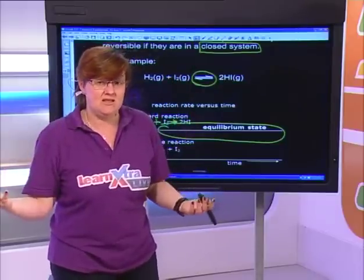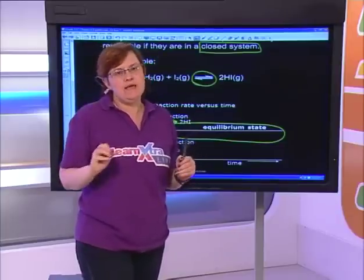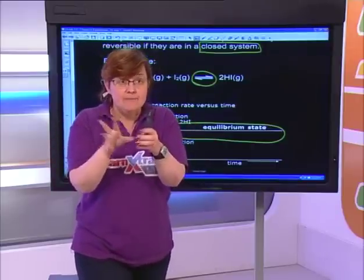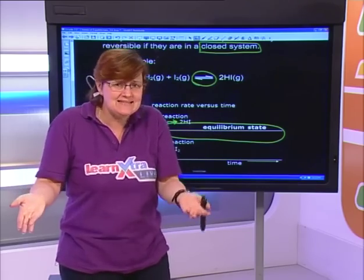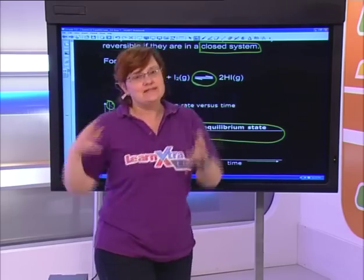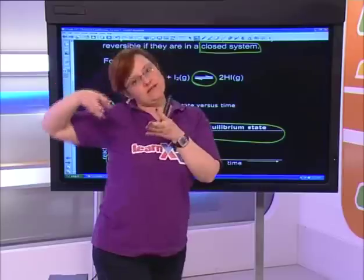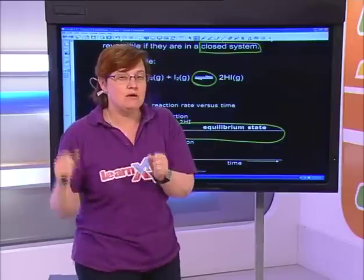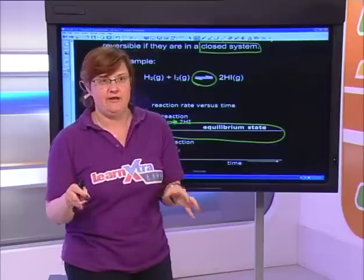I can adjust where the equilibrium lies. In industry this is really important — for example, if we're making ammonia and only get a little bit by the time it reaches equilibrium, that doesn't help the fertiliser industry. So we adjust things like pressure, temperature, and volume to get lots of ammonia at the end. This is what we call shifting of the equilibrium.